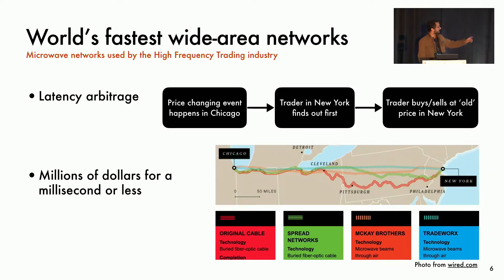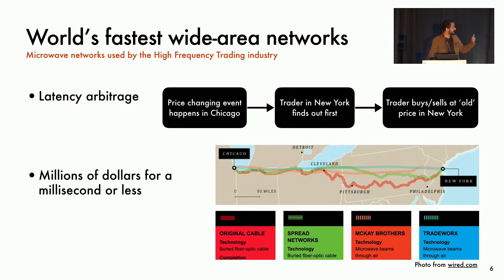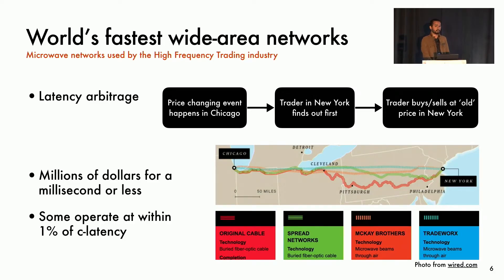Between the two markets — Chicago on the left side and New York — there was originally fiber connectivity, which you see as the crooked red line. That was too high latency, so Spread Networks laid a new shorter fiber path in green, but that was not fast enough either. So the industry switched to wireless, which is the McKay Brothers network in orange. But they were still not done, so they straightened up the path as the blue TradeWorks line here shows — it's almost an exact straight line. HFT networks have now gotten so fast that some operate within 1% of the speed of light, 1% of the physical lower bound.